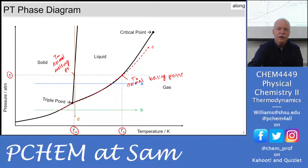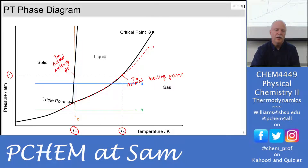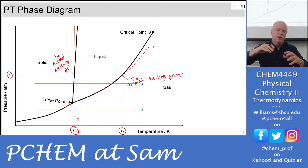A new path: we start in the solid and drop the pressure at constant temperature. Drop the pressure, drop the pressure — at this point the solid melts and becomes liquid. Keep dropping the pressure and the liquid boils and we get gas. So we're just increasing the volume, dropping the pressure by keeping the same temperature.